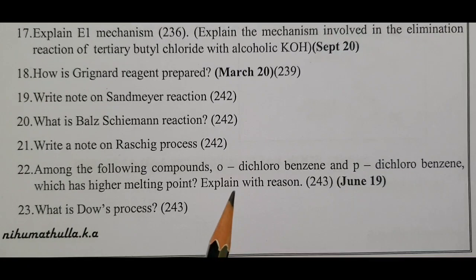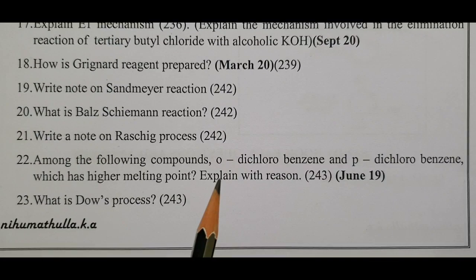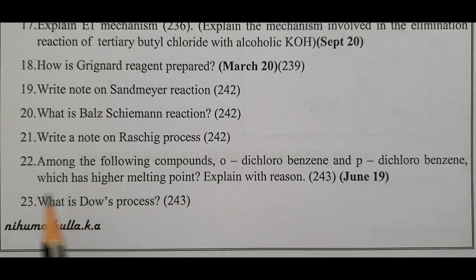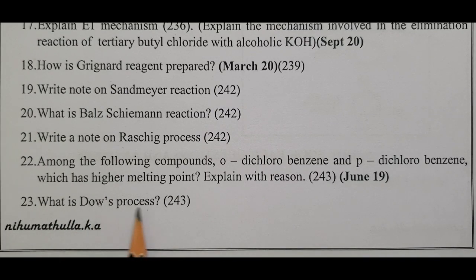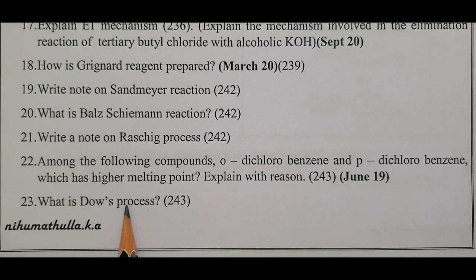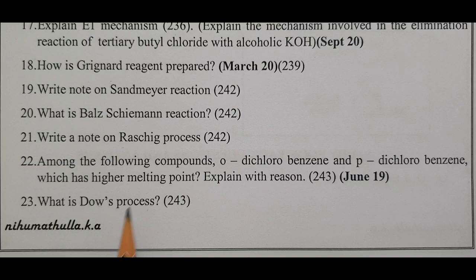Two more important questions. What is Tau's process? Phenol is prepared from chlorobenzene by one method involving specific temperature, pressure, and presence of the correct reagents.